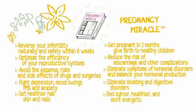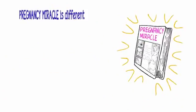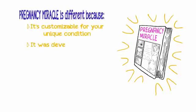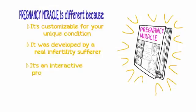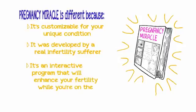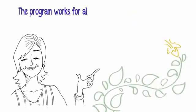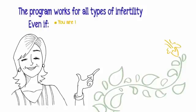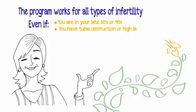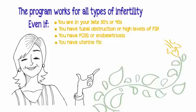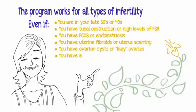Pregnancy Miracle is different because it's customizable for your unique condition. It was developed by a real infertility sufferer. Pregnancy Miracle works for all types of infertility, even if you are in late 30s or 40s, have tubal obstruction, high levels of FSH, PCOS, endometriosis, uterine fibroids, ovarian cysts, a history of miscarriages, or your male partner has low sperm count or motility.